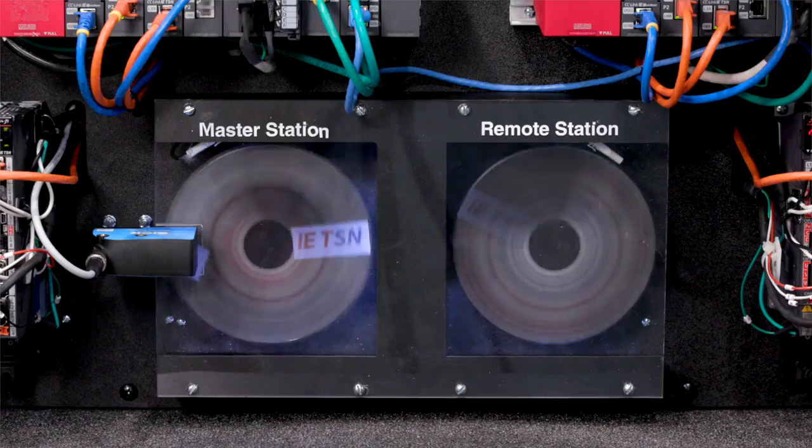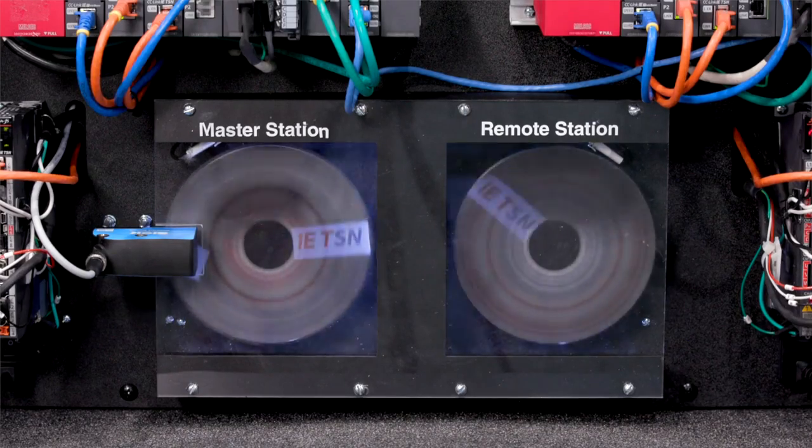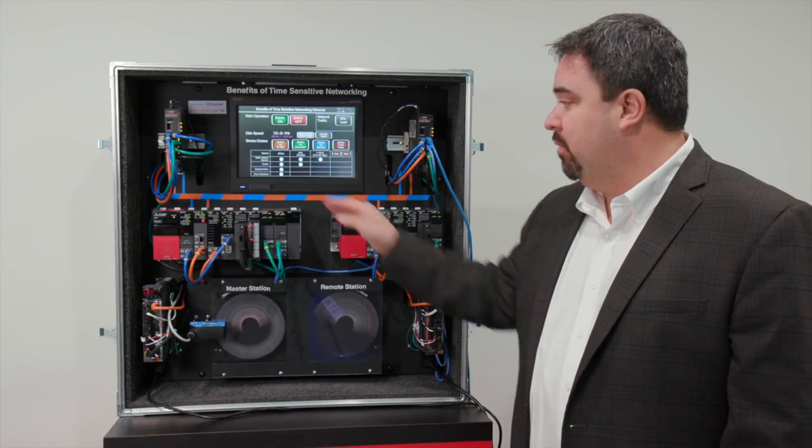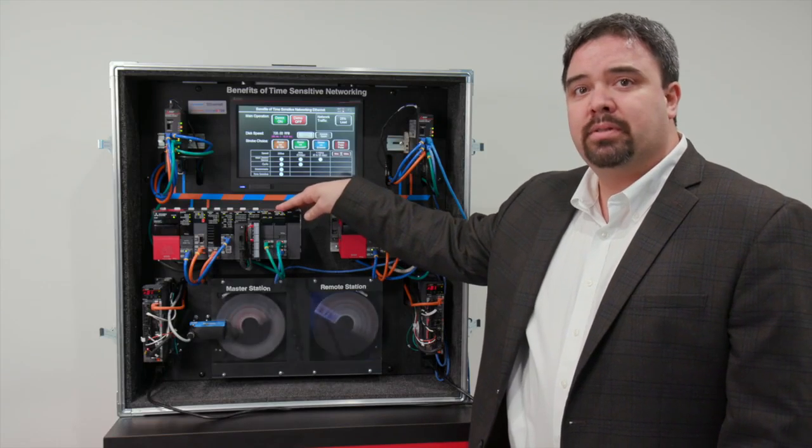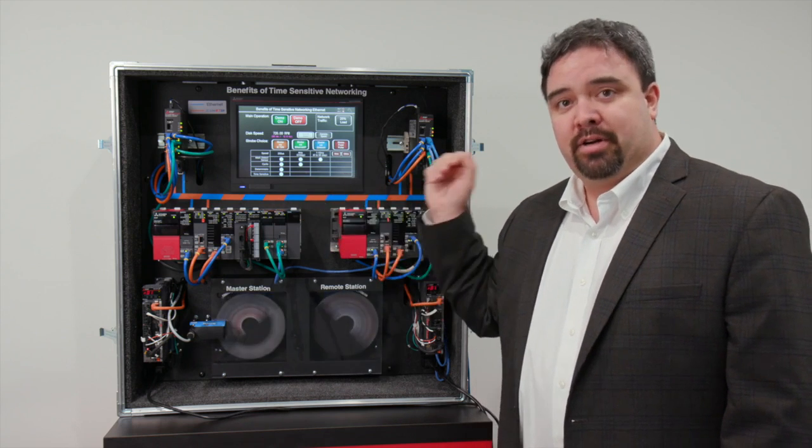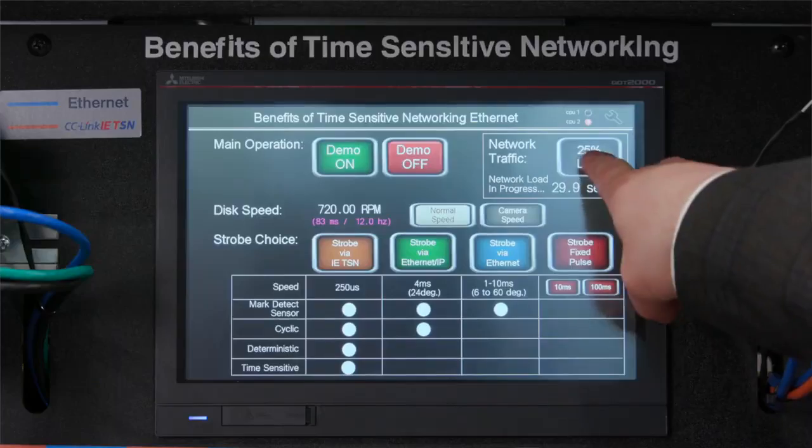Let me go back to Ethernet and we can see the Ethernet strobe. In a minute, I'm going to load up the network with traffic. What we have is a Linux module. We've created a network generator and it's going to flood and try to shut everything off. I'm going to turn that on.